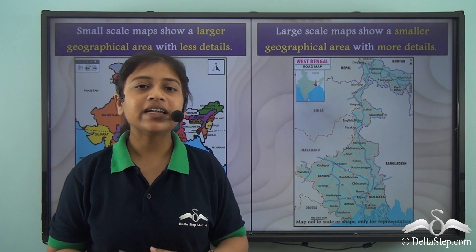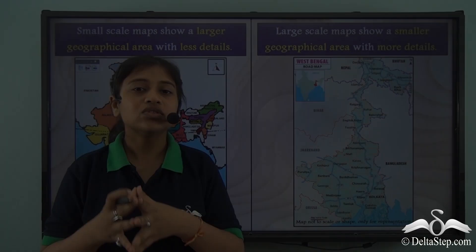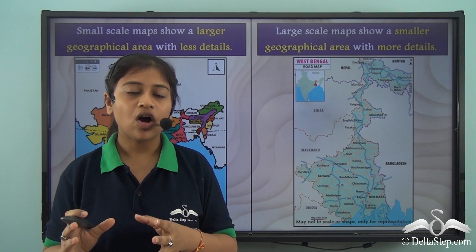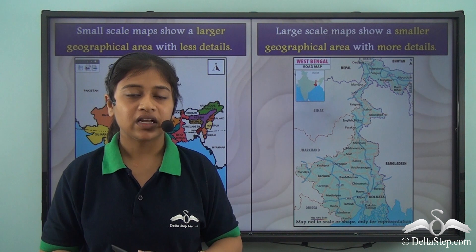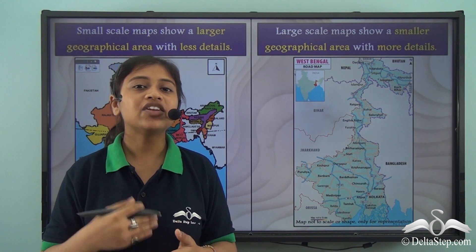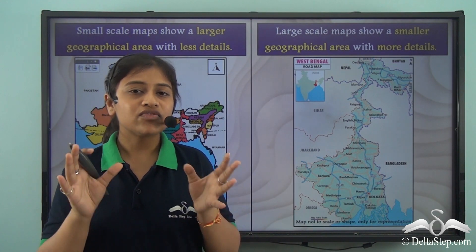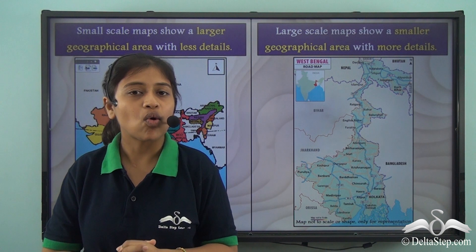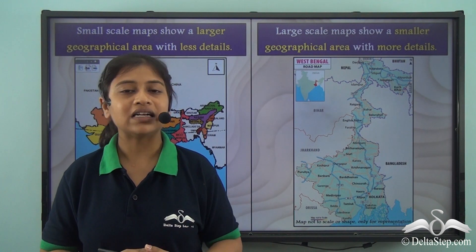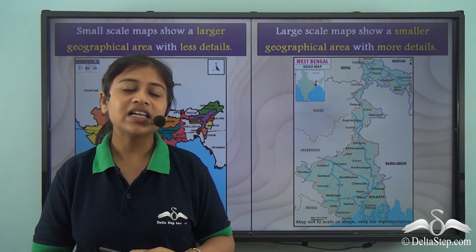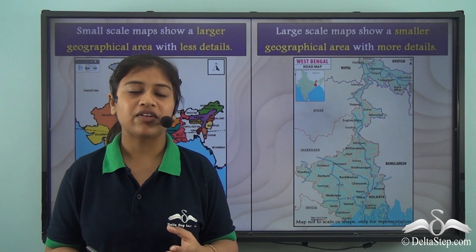In this lesson we were able to understand the significance of maps and how they can be used to study a particular area on the Earth or the entire Earth at once. We learned that while drawing or studying a map, we need the help of scales, which are of three types each with its own purpose. We also learned that maps can be broadly categorized as small scale or large scale maps. In our next lesson, we will understand the importance of topographical maps and their different features.